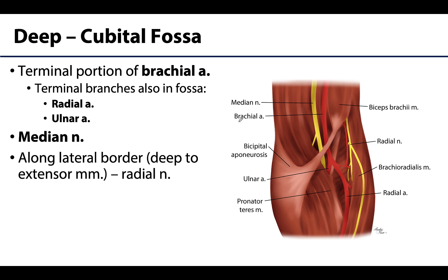The terminal portion of the brachial artery is located in the superior portions of the cubital fossa. Recall that the brachial artery is the major artery of the arm; within the cubital fossa it divides into its terminal branches — the ulnar artery and the radial artery.